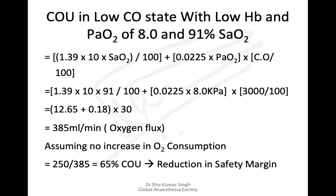Consider a patient with low cardiac output who has a low paO2 and saturation of around 90 percent. In that case, the oxygen flux is reduced to 385 ml/min. If we assume oxygen consumption remains at 250 ml/min, the coefficient of utilization increases to 65 percent, causing a reduction in the safety margin.